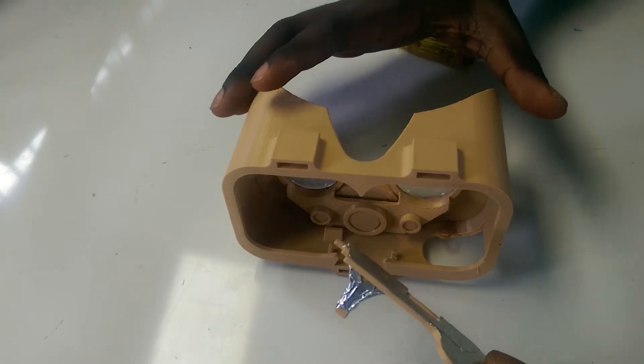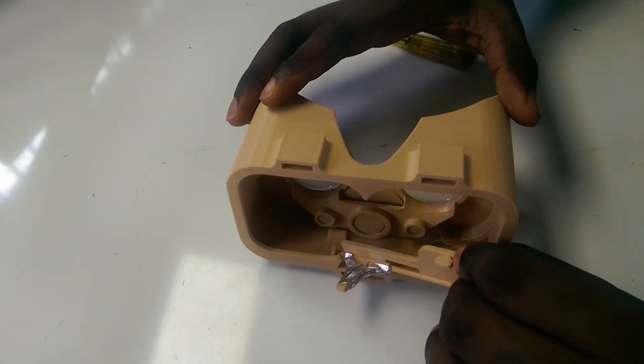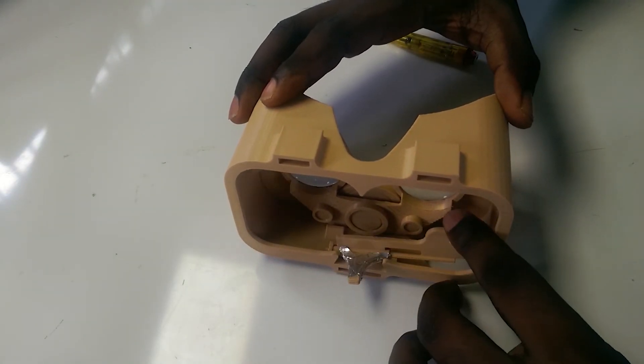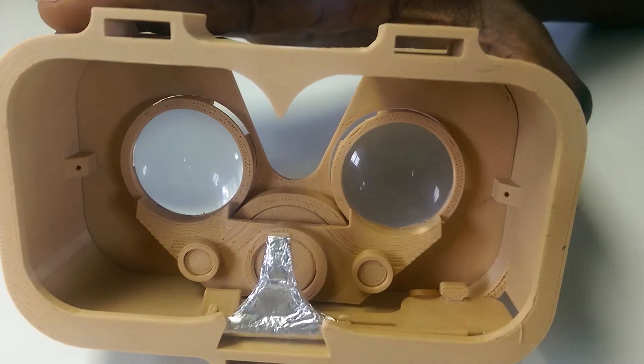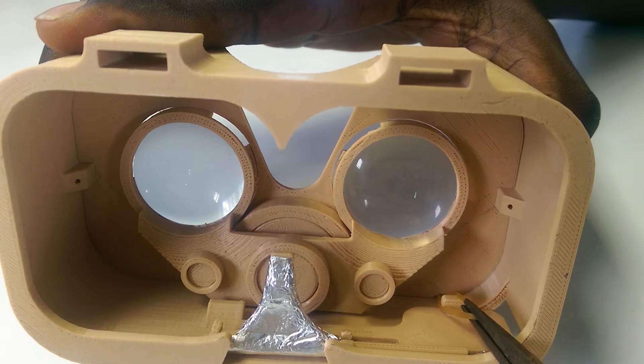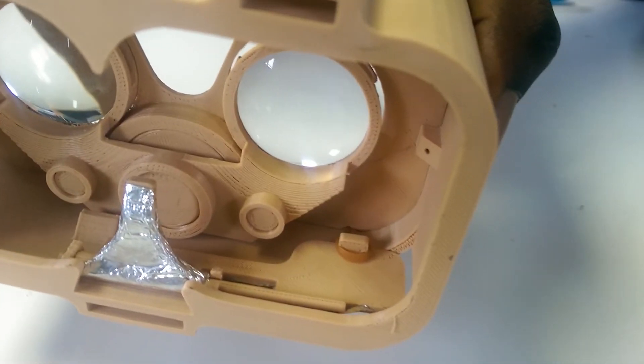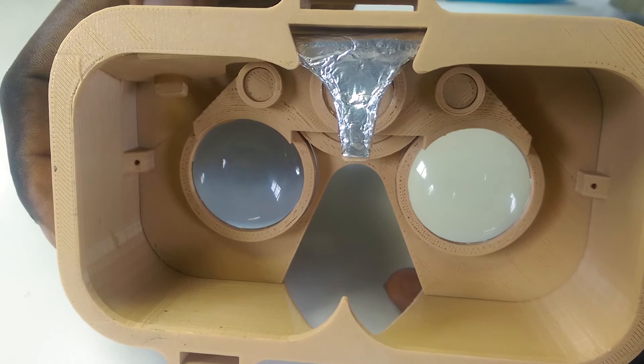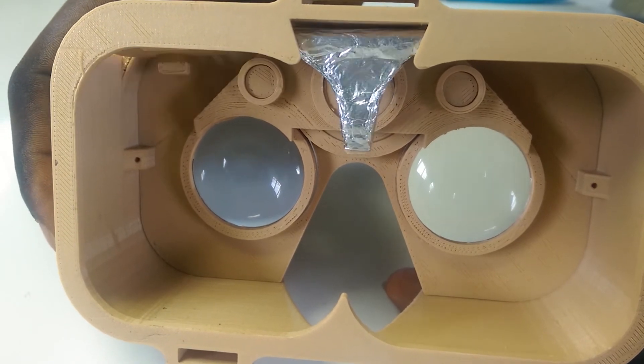Slide one end of the clicker into the hole on the right and then push down to lock it in the left hole. You can then use a plier to pull the rubber band over the knot on the clicker. This allows you to make selections in the cardboard app while wearing the headset.